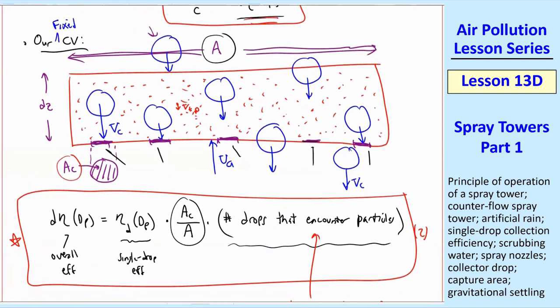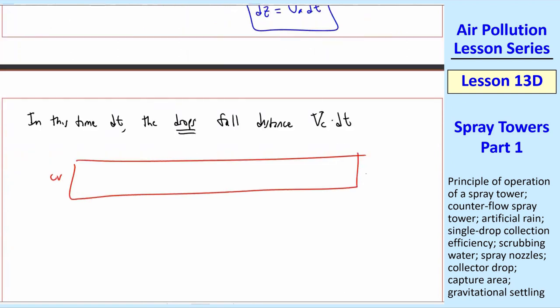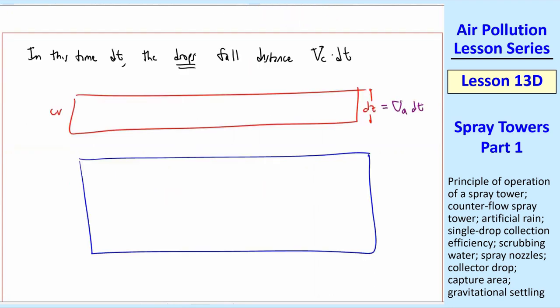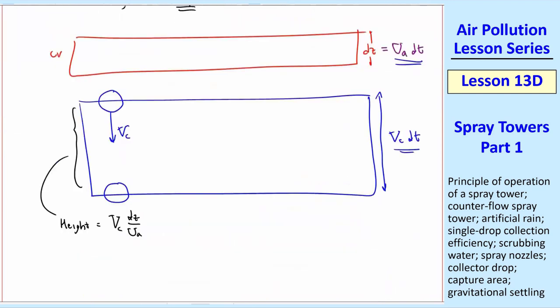But the drops themselves are falling at this speed vc in an absolute reference frame. So in that time, that time dt, they fall a distance that's vc times dt. So if this is our control volume with a height dz, our little slice, and as we said, dz is UA dt. In time dt, one of these drops will fall this distance at speed vc. So that distance, that height, is vc dt, which is bigger than UA dt. While dz is UA dt, so this height is vc dz over UA.